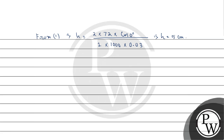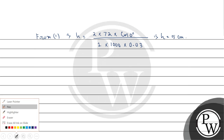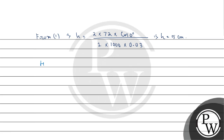Now when the tube is lowered, the length of the tube above the surface of water is H dash equals 30 mm, which we convert to centimeters — therefore 3 centimeters. So we can see that small h (5 cm) is greater than H dash (3 cm).